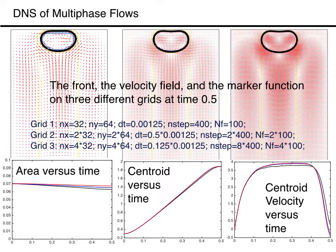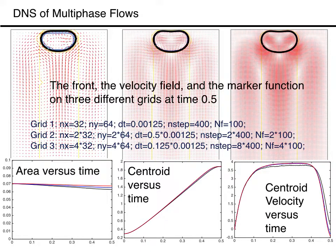The three plots on the bottom show the area of the bubble, the distance of the bubble centroid from the bottom wall, and the centroid velocity versus time for all three runs. The black line is for the lowest resolution and the red line is for the finest one. The mass conservation here is not as good as for the drop, but it improves with increasing resolution, and there are only minor differences in the centroid location and velocities for the two finest grids.